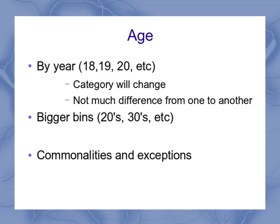If you use bigger bins, you might be able to set some of those difficulties aside. You could say the students who are in their 20s, the students who are in their 30s, etc. You would expect that students in their 20s are going to be different from students in their 50s — each group has things common to that group but different from others. But not all 20-year-olds act like their peers, and not all 50-year-olds act like their peers, so there will be exceptions. And there's not a lot of difference between a 29-year-old and a 30-year-old, so exactly where you put the break is a little bit arbitrary.